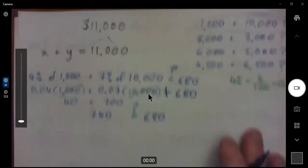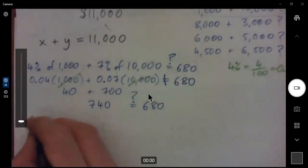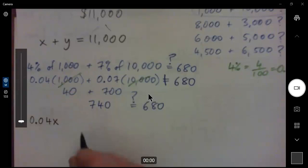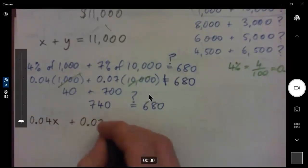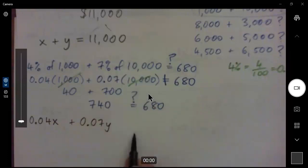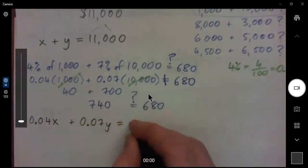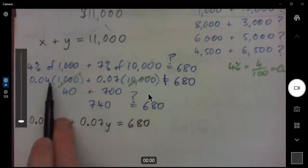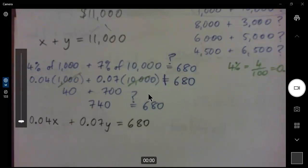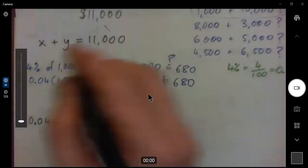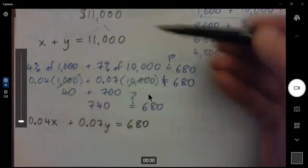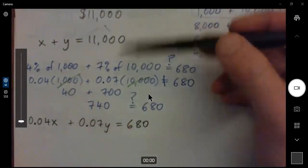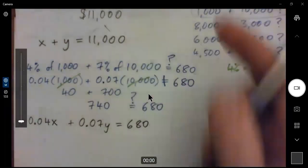Okay? So shouldn't we replace the 1,000 and 10,000 with letters? Because they were a guess anyway, right? Yeah. So shouldn't we do this? 0.04 times X instead of 1,000 plus 0.07 times Y instead of 10,000. And that should equal 680. So instead of making a guess and throwing the numbers in and see what you get, let's put in letters. There you go. And now we have two equations, completely different equations, with two missing numbers, X and Y, right?